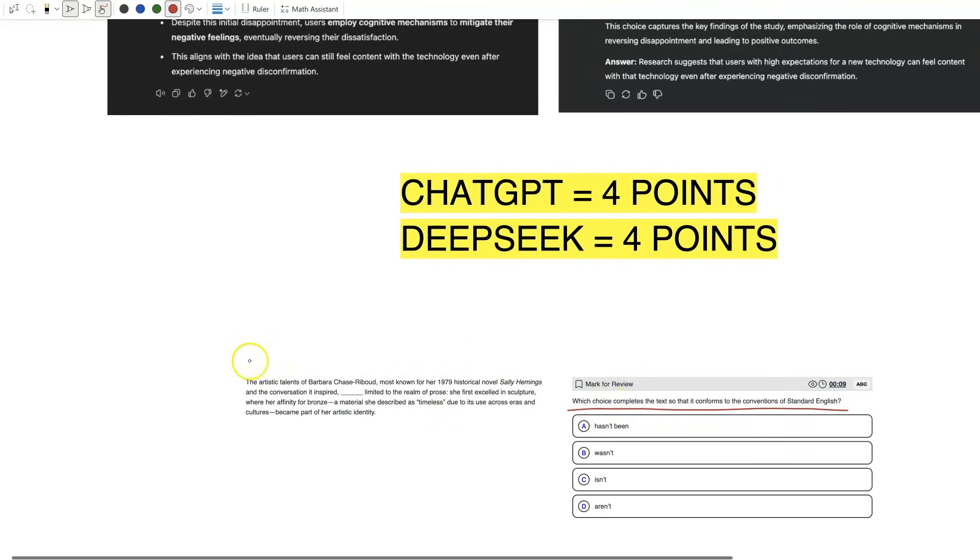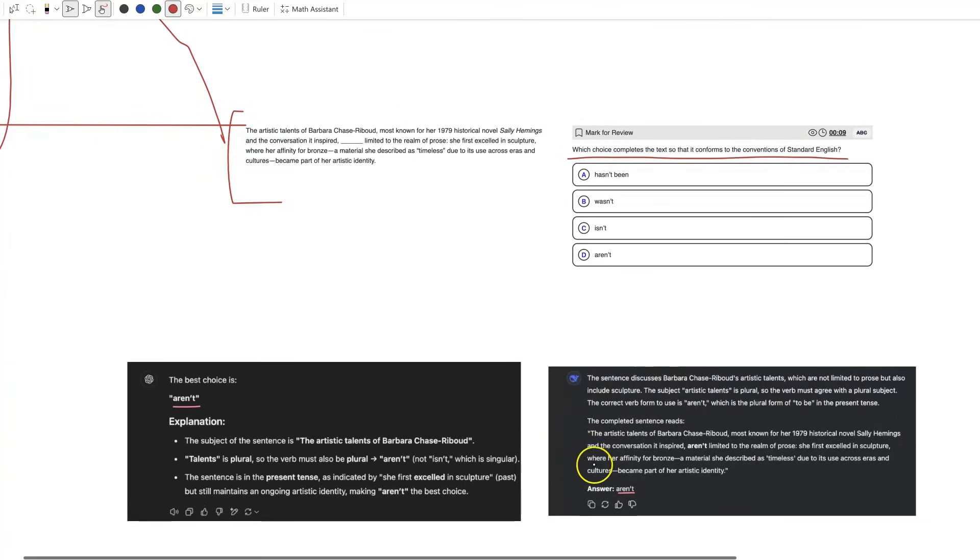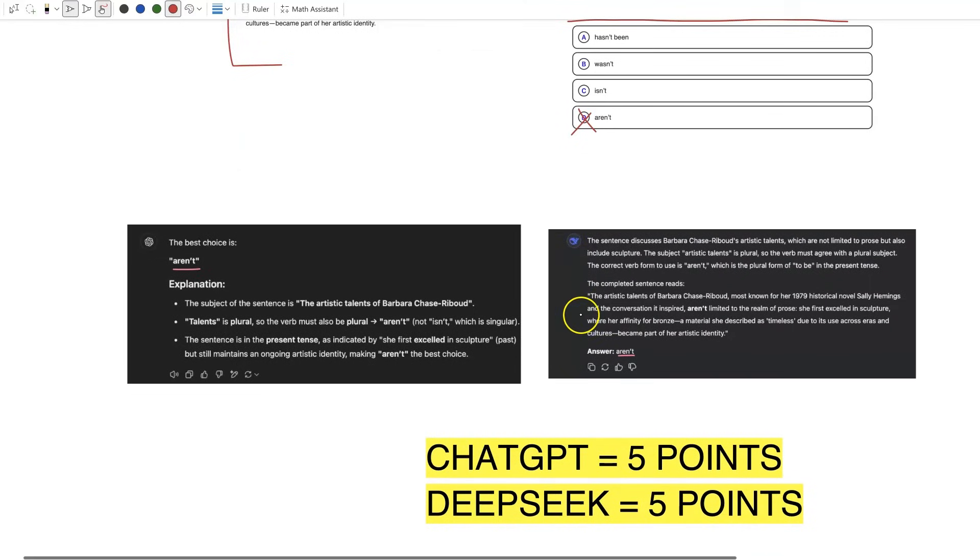Which choice completes the text so that it conforms to the conventions of standard English? In this passage... oh what is happening to this passage right here? They both choose 'aren't,' which is the correct answer—D. And they are both now up to five points.